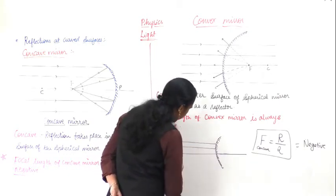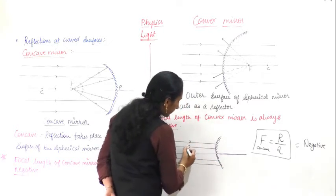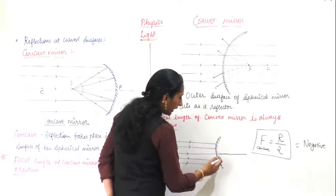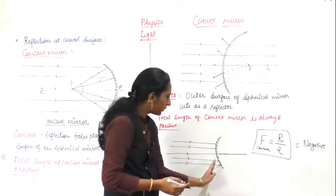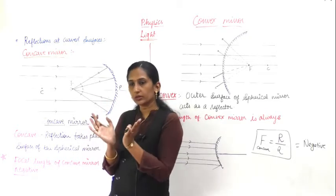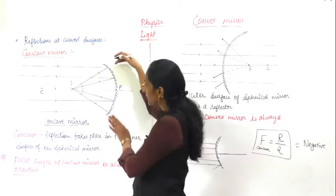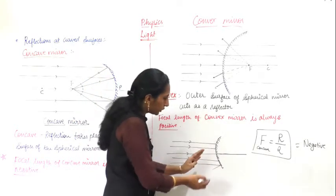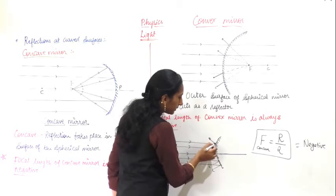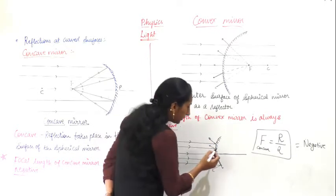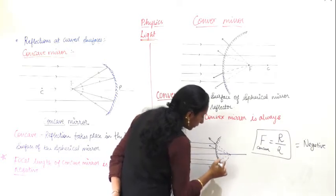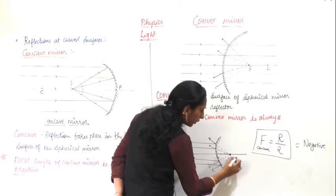I am drawing the rays falling on the convex mirror. These light rays fall on the convex mirror and reflect back outward. As the surface curves outward, instead of focusing inward as in the concave mirror, the reflected rays diverge outward. To find the focus, you have to extend these reflected light rays backward, behind the mirror.